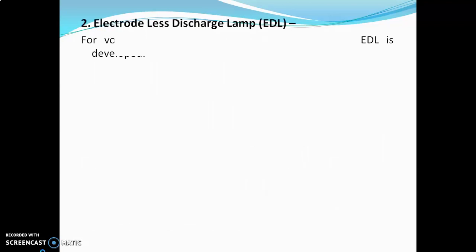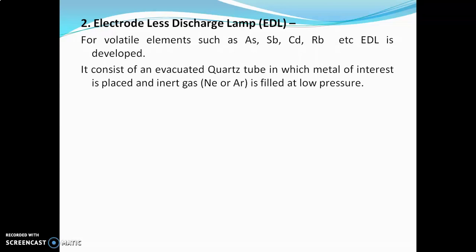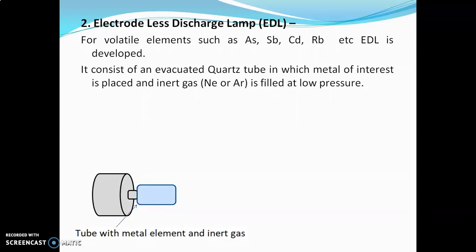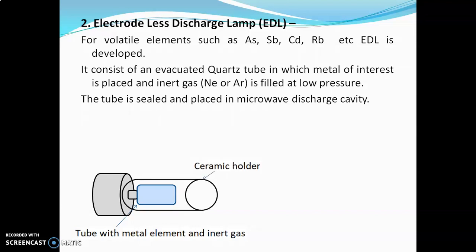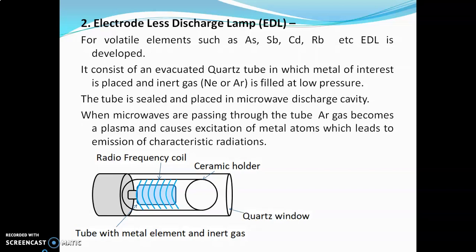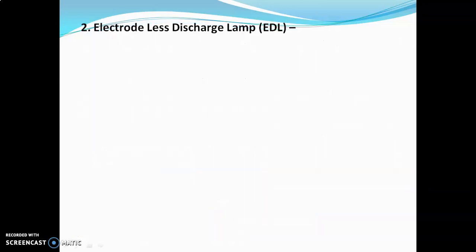For volatile elements such as arsenic, cadmium, and rubidium, the electrodeless discharge lamp (EDL) was developed. It consists of an evacuated quartz tube in which the metal of interest is placed, and the tube is filled with inert gas at low pressure. The tube is sealed and placed in a microwave discharge cavity made up of ceramic material with a radio frequency coil and a quartz window. When microwaves pass through the tube, the argon gas becomes plasma and causes excitation of metal atoms, which leads to emission of characteristic radiations.